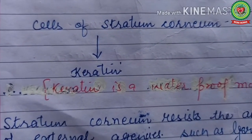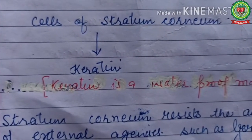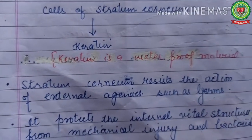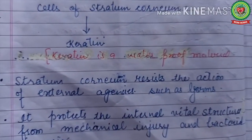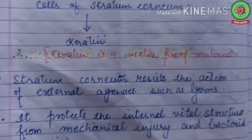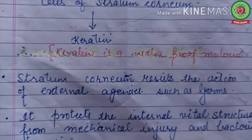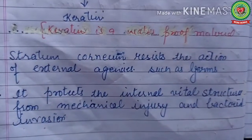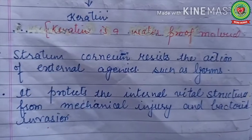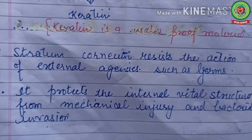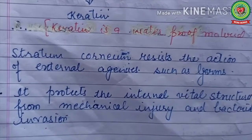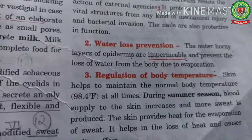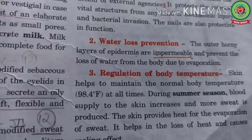The cells of the stratum corneum layer are dead cells containing keratin, which is a waterproof material. Stratum corneum resists the action of external agencies like germs and protects the internal vital structures from mechanical injury and bacterial invasions.